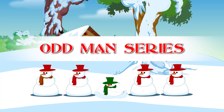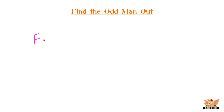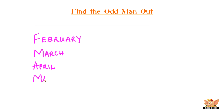Odd man series: find the odd man out. Given below are four random months. Your options are February, March, April, May. Can you identify which month stands out from the others? This looks pretty simple, huh? Your time starts now.